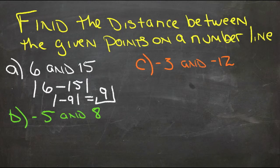Therefore it's 9 hops, or 9 steps, between 6 and 15 on the number line.